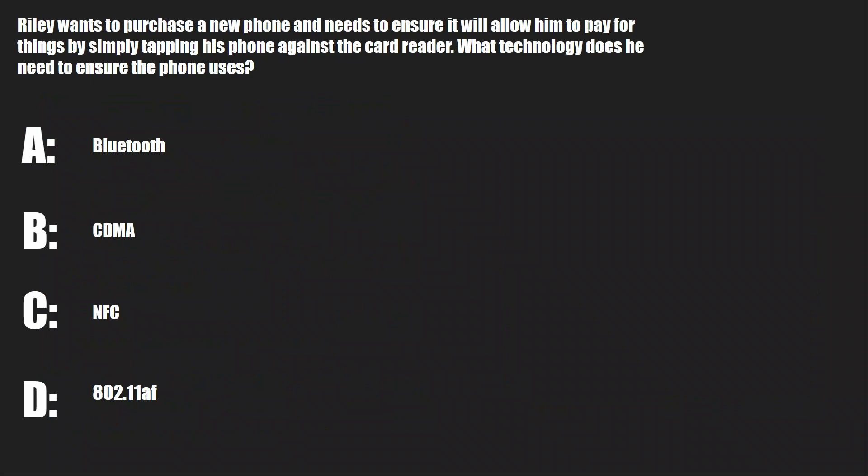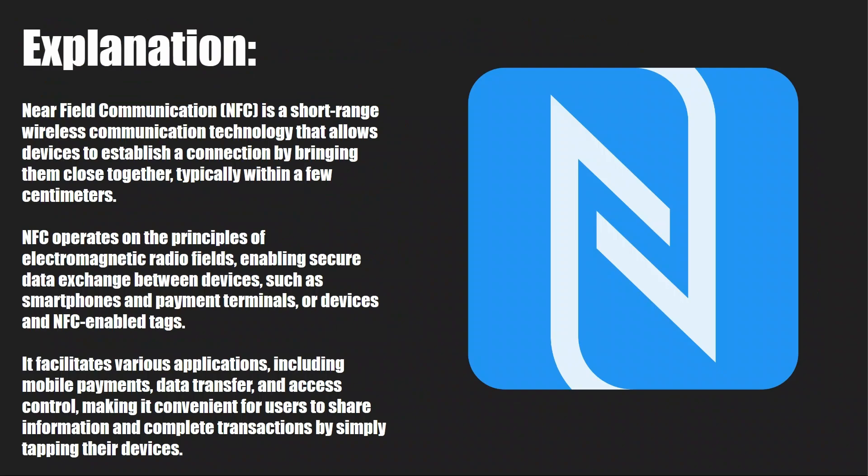Next question. Riley wants to purchase a new phone and needs to ensure it will allow him to pay for things by simply tapping his phone against the card reader. What technology does he need to ensure the phone uses? A, Bluetooth. B, CDMA. C, NFC. Or D, 802.11AF. And the answer is C, NFC. If you're using your phone to tap and pay for things, you're using near-field communication technology — NFC.